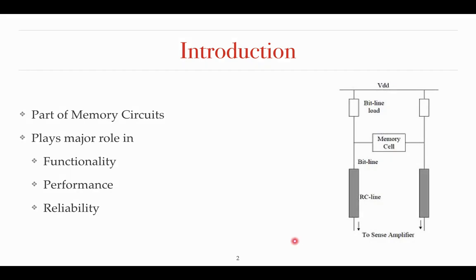As shown in the figure, this is a simple block diagram of static RAM. This is the memory cell which is constructed using six different transistors. Four of them are used to construct inverter structures. Two inverters are there, they are cross-coupled, and two other transistors are used to access this memory cell — they are called access transistors. These two access transistors are connected to two bit lines. One line is called bit line and another line is bit bar line. Bit as well as bit bar line act as input during the write operation and as output line during the read operation.